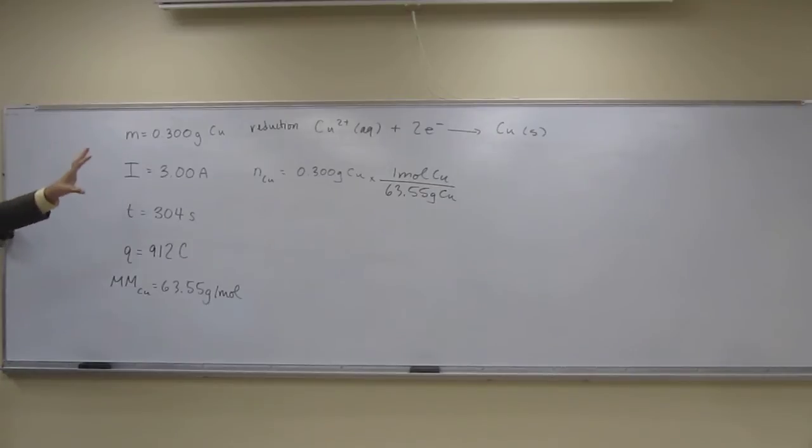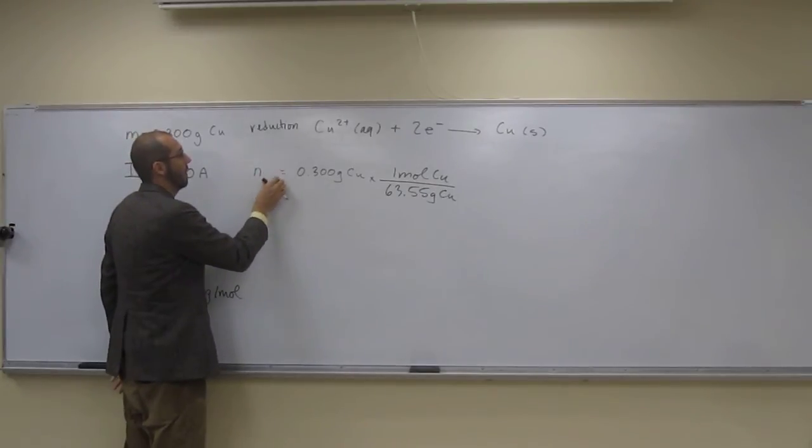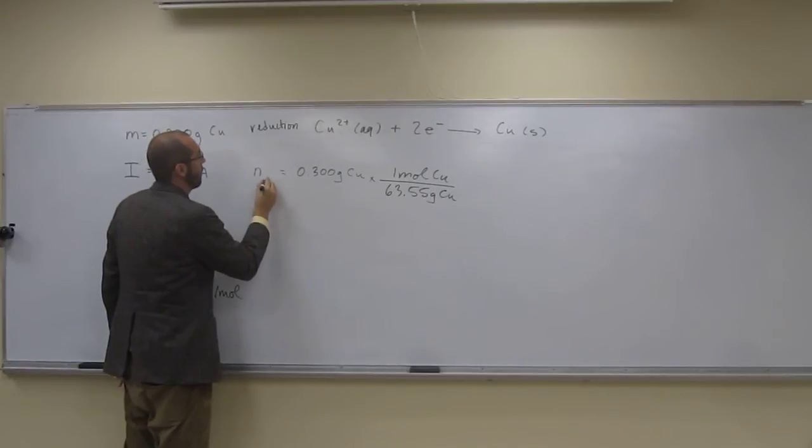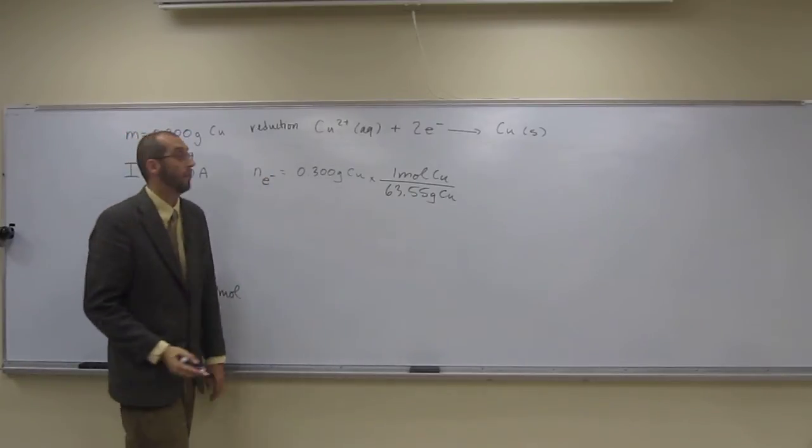But from there, so that would be moles of copper. We're going to get moles of electrons from that. That's how we're going to figure out Faraday's constant. So let's just go one step further and do the number of moles of electrons that we've got.